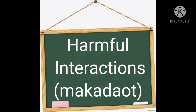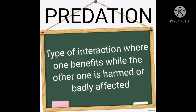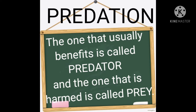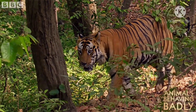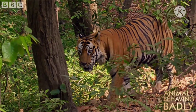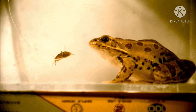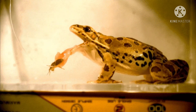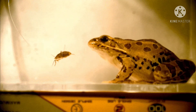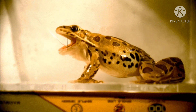Harmful interactions. Number one: predation. This is the type of interaction where one benefits while the other is harmed or badly affected. The one that benefits is called the predator and the one that is harmed is called the prey. The sizes of predator and prey populations are related — if the number of prey is large, the number of predators may decrease. Example: the relationship of a frog and an insect, where the frog is the predator and the insect is the prey.